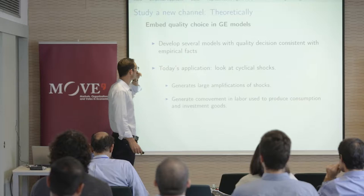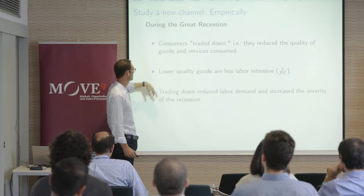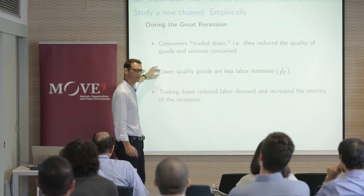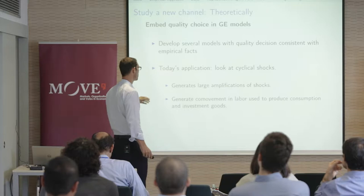Today I'm going to apply this to a cyclical shock. I'm going to show you that the introduction of this quality angle, together with this idea of labor intensity, is going to amplify quite significantly the effects of shocks. We're also going to do some interesting things about co-movement and a bunch of other long-lasting puzzles in business cycles.